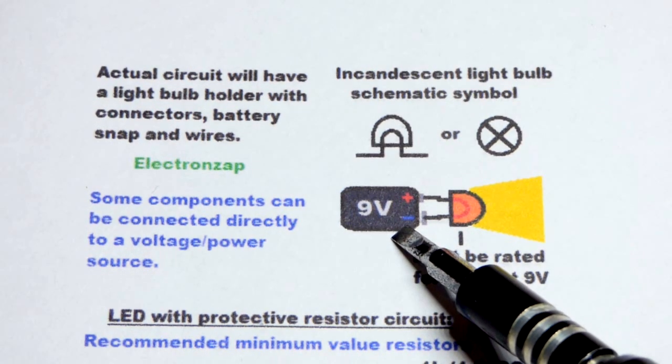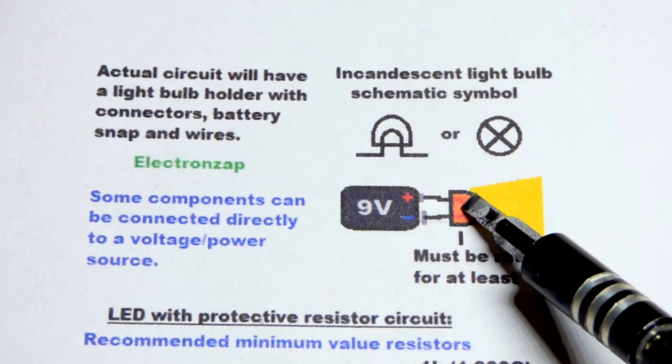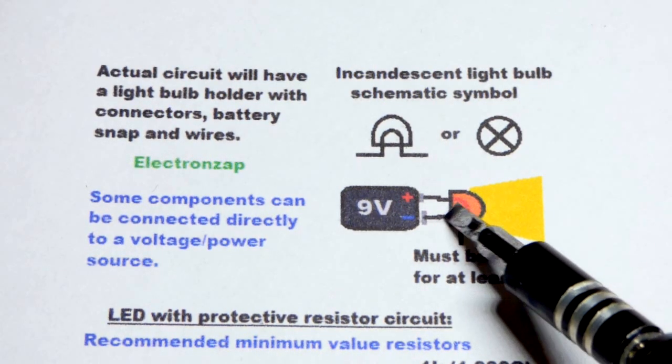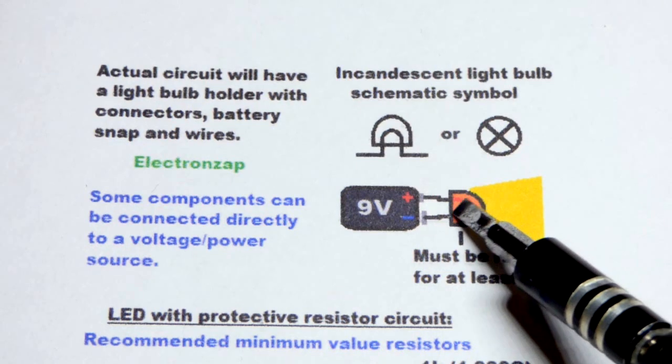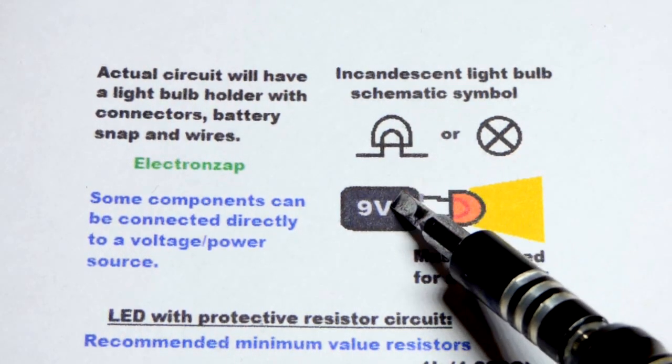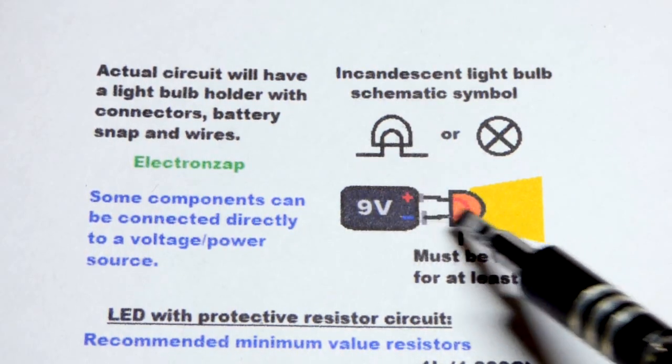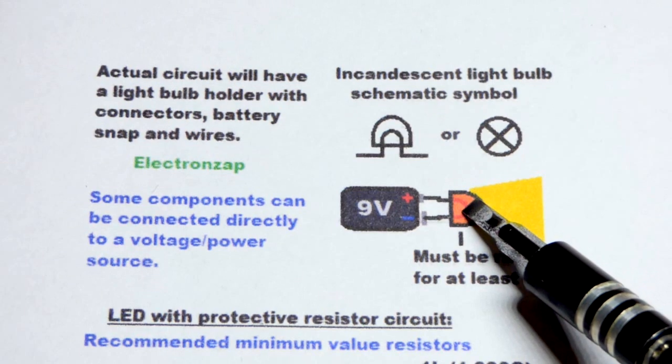As long as it's rated for 9 volts, it's going to limit the current. It has a filament in there, and current flows—conventional current flows positive to negative, or electron flow negative to positive. In any case, it flows continuously. The filament heats up and gets hot enough to emit light.